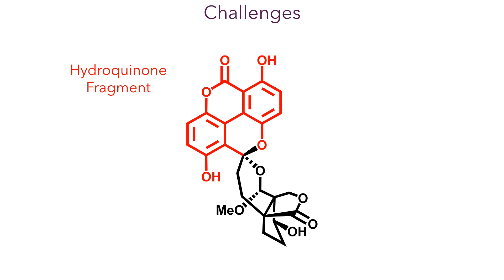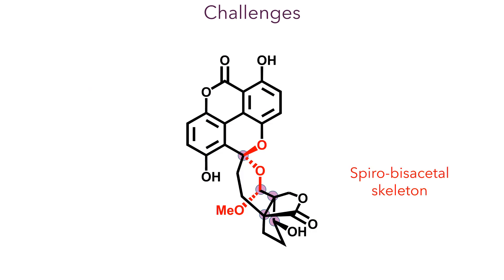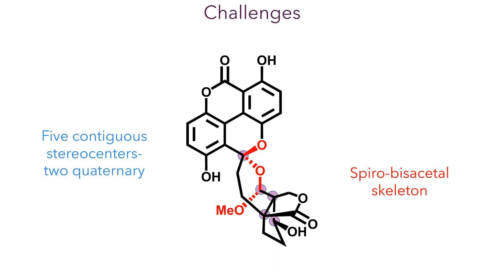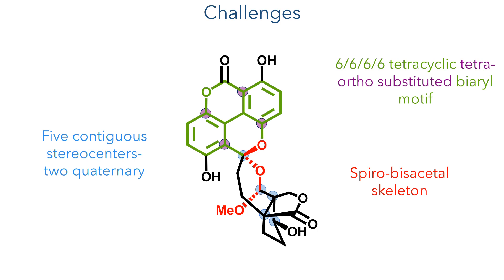The structure of the molecule is quite interesting as it possesses two distinct fragments. It has an aromatic moiety derived from hydroquinone, which is appended to a terpene-derived scaffold. This junction takes the form of a spirocyclic bisacetal and contains two of the five stereocenters present in the molecule. The northern fragment is comprised of a 6-6-6-6 tetracyclic, tetra-ortho-substituted biaryl motif, connected to the bisacetal system.